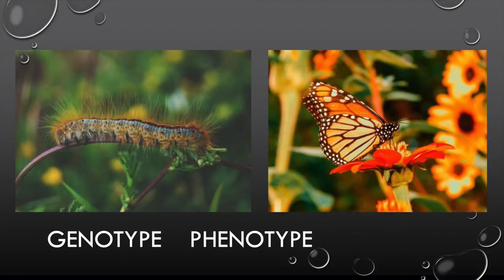Your genes don't change, but something else changes — something that decides what's going to happen depending on how you live. We use words like genotype and phenotype. Genotype is basically what your gene is; phenotype is what you look like. Look at this butterfly — it came from the caterpillar. Did the genes change when the caterpillar turned into a butterfly? No. It's the same gene, but the expression of that gene has changed.